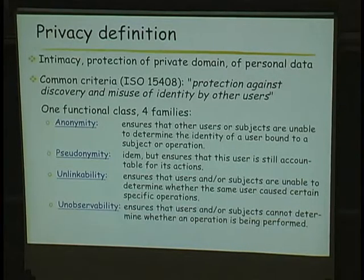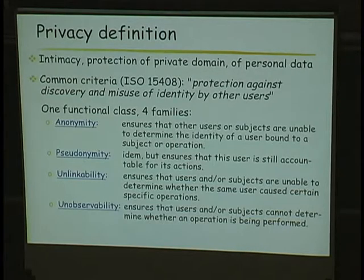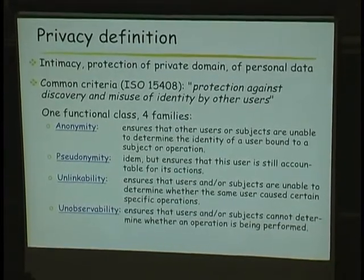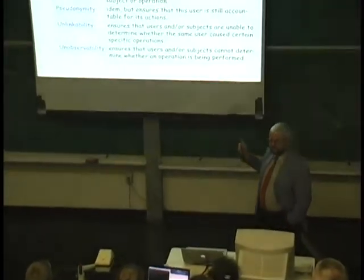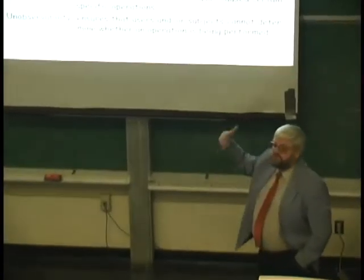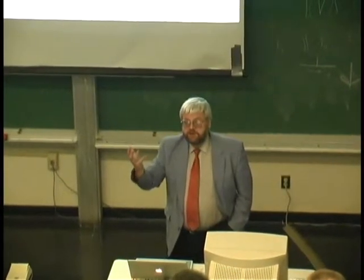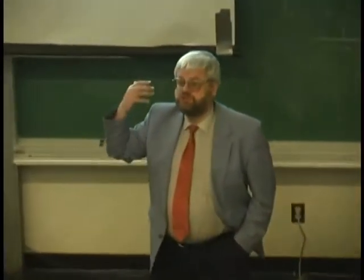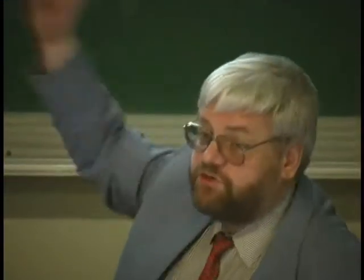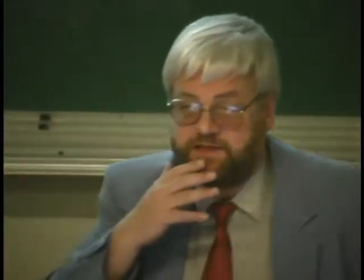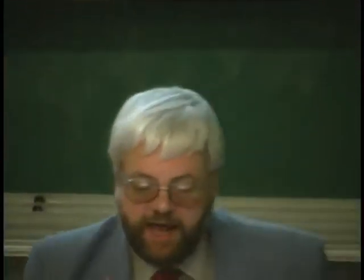In the Common Criteria there are four families for this functional class. Anonymity means that other users cannot know the identity of a user running some operation — except that this user is still accountable for their acts, so there should be some way to retrieve the identity to punish somebody misusing this anonymity. Pseudonymity: with anonymity there is no way to retrieve the real identity, so in most cases you actually mean pseudonymity rather than anonymity.